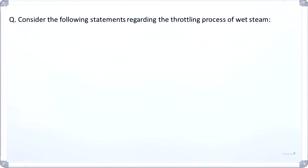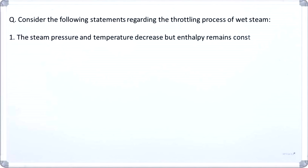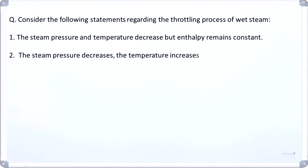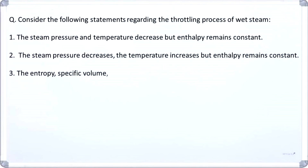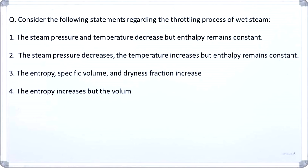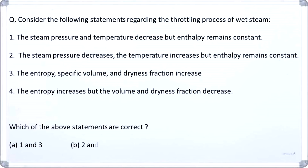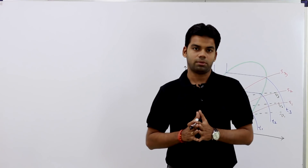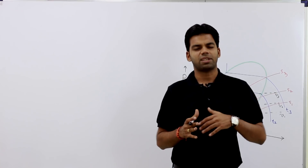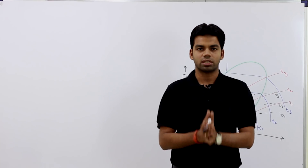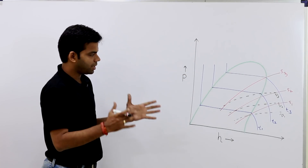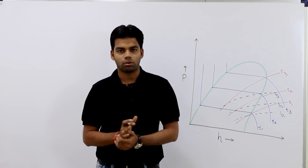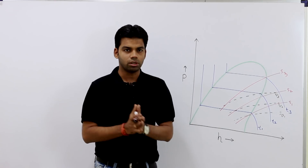Now we have a second question: consider the following statements regarding the throttling process of wet steam and determine which statements are correct. Since in throttling the enthalpy remains constant, it is better to use the pressure-enthalpy (pH) diagram. This is a basic pH diagram — I will first explain all the constant property lines: constant temperature, constant pressure, constant entropy, and constant volume.